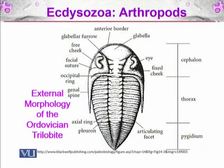Here you can see the cephalon, thorax, and pygidium on the right side, showing the external morphology of an Ordovician trilobite. Starting from the anterior border, there is the glabella, glabellar furrow, and primitive eyes through which they could visualize their environment. There is also the occipital ring, genal spine, axial ring, pleuron, articulating facet, and ultimately the pygidium — the third lobe at the end, which is the abdominal area.